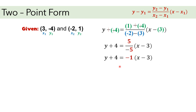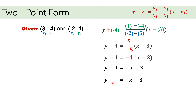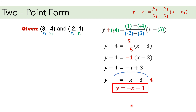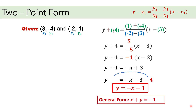Distribute negative 1 to x minus 3: negative 1 times x gives negative x, and negative 1 times negative 3 gives positive 3. Then write it in slope-intercept form. Positive 4, when transposed, becomes negative 4. Combine 3 and negative 4: that gives negative 1. So the equation is y equals negative x minus 1, or in general form, x plus y equals negative 1.